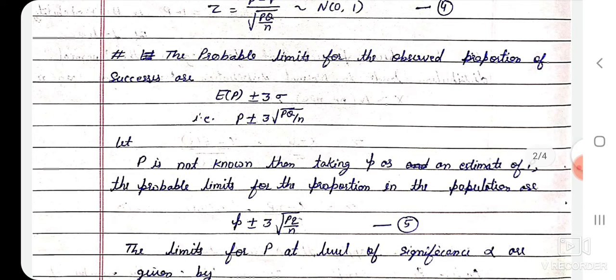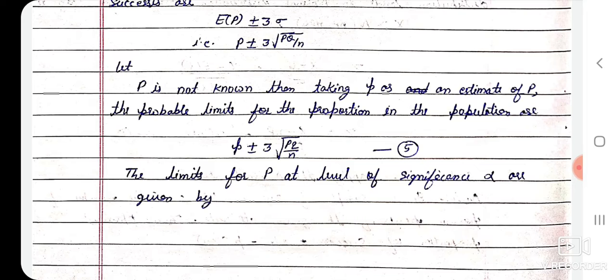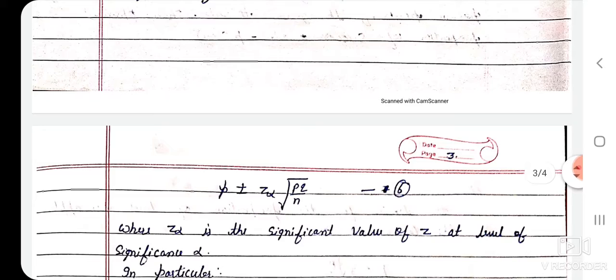If capital P is not known, then taking small p̂ as the estimate of P, the probable limits for the proportion in the population are p̂ ± 3·root(pq/n). The limits for P at level of significance alpha are given by p̂ ± z_alpha · root(pq/n), where z_alpha represents the significant value of z at level of significance alpha.